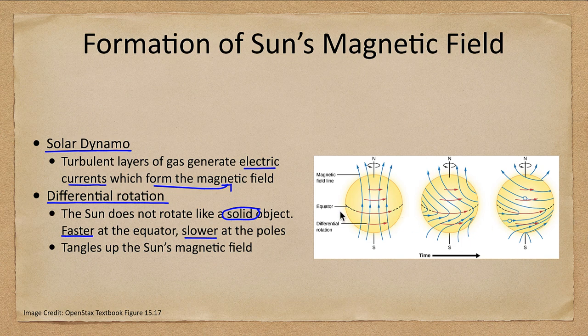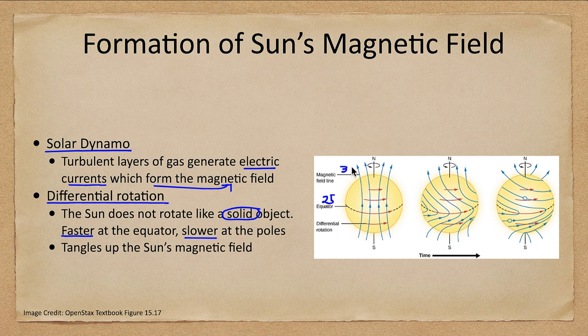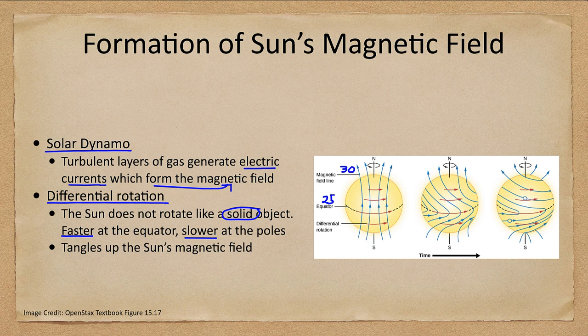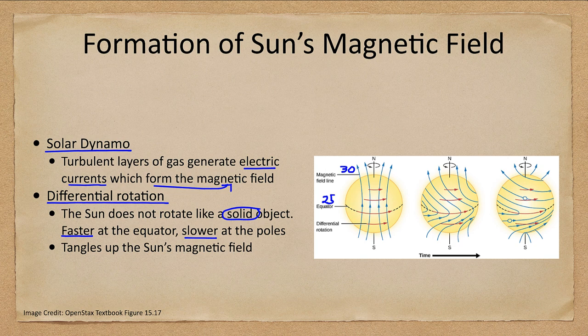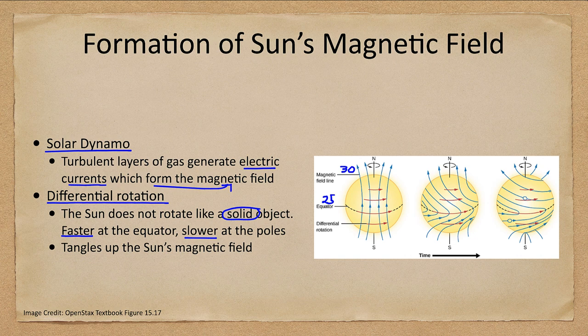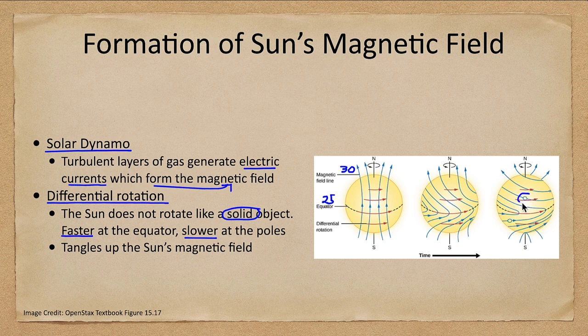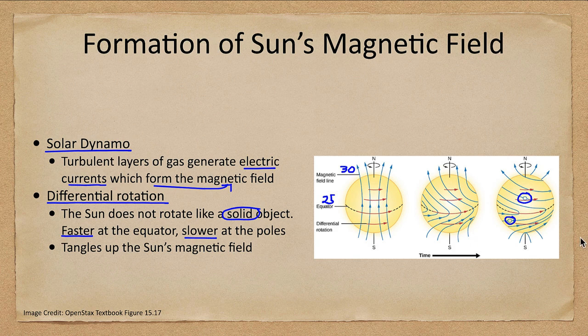It takes about 25 days at the equator for a rotation and it might take 30 days near the pole. That's five days difference, meaning after a few cycles the equator picks up five days on the pole. Over a few months it has lapped the pole, and over a couple of years it really starts to tangle up. Then we get those areas where sunspots will occur, where it got so tangled that the magnetic field lines pop out through the surface and that will give us the sunspots and the magnetic regions that we see.